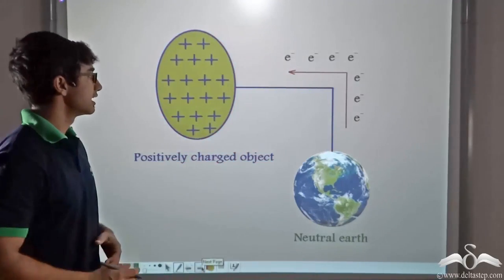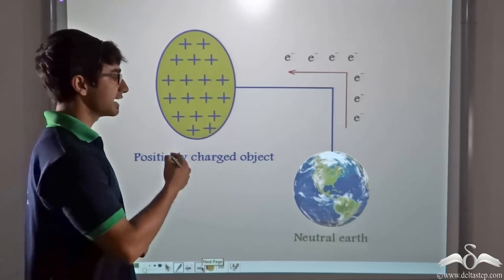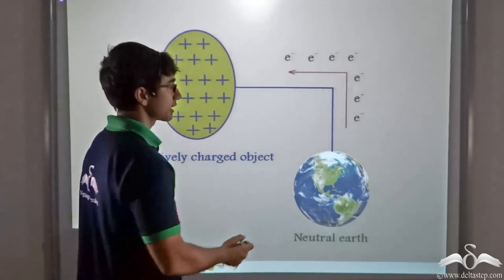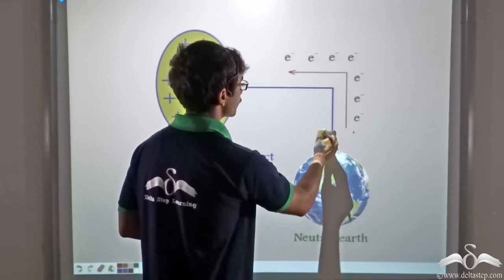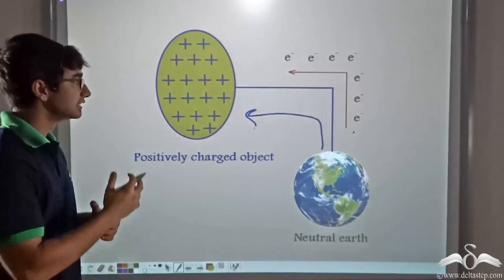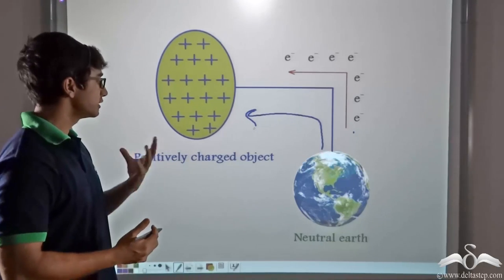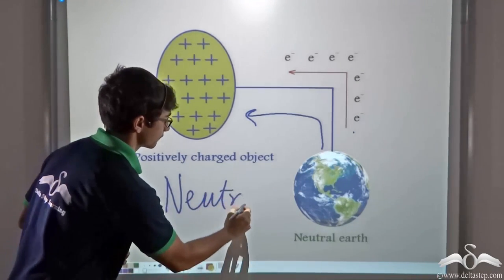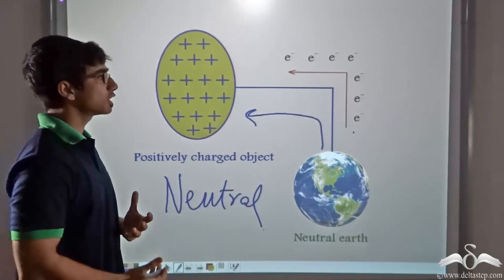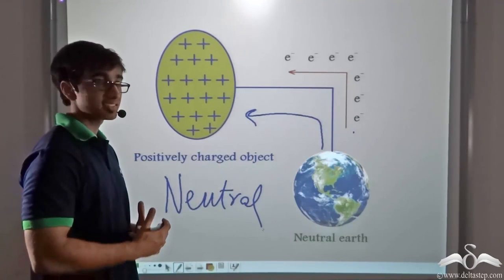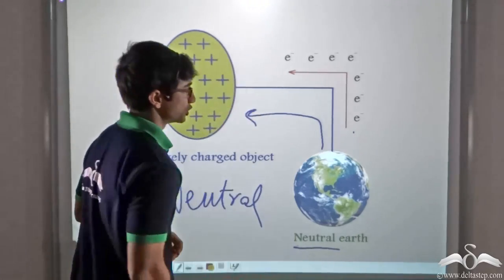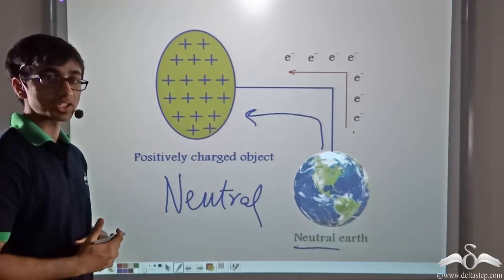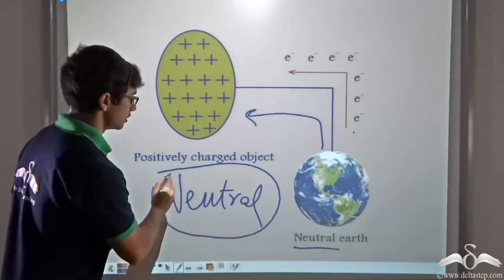Similarly, if we take positively charged wool and connect it with the earth, the earth — because it is a huge source for electrons — will supply electrons that flow from the earth into the wool. These electrons neutralize the positive charges present in wool, and wool becomes neutral. Removal of a few electrons from the earth is not going to change the charge of the earth; it remains neutral, and wool, where there was a deficiency of electrons, also becomes neutral.